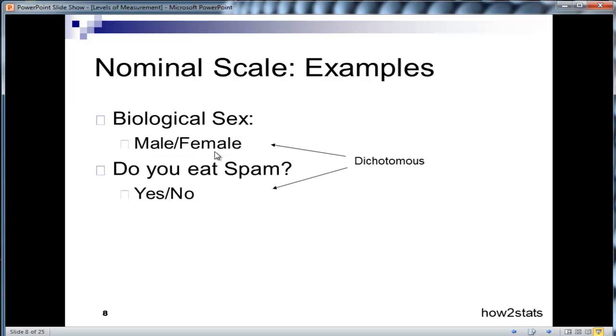Because they only have two categories. Nominal scales that only have two categories are also known as dichotomous.